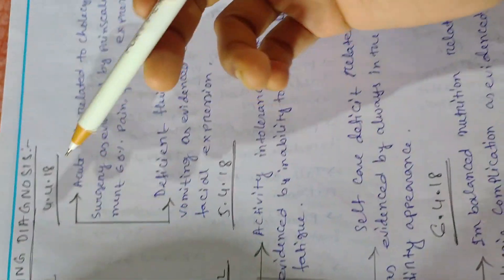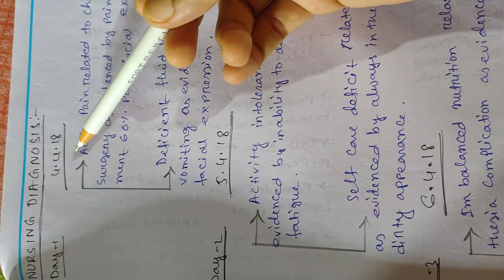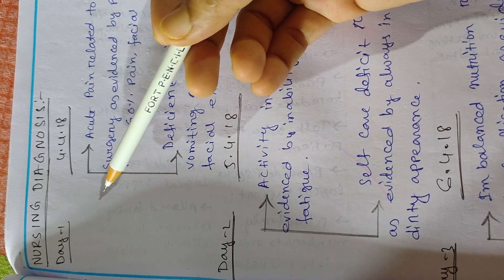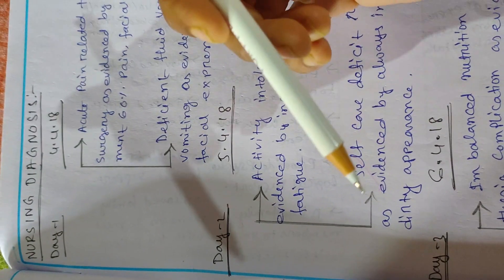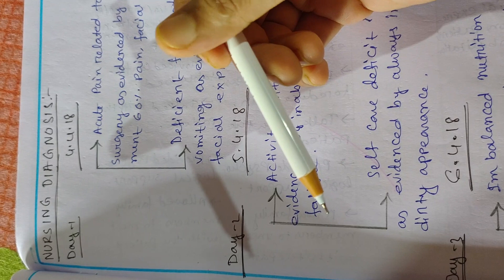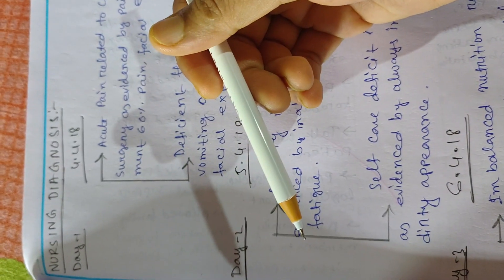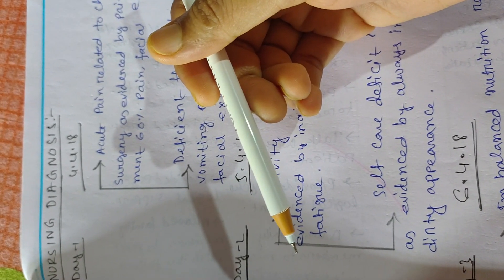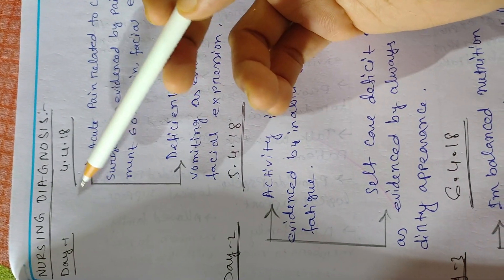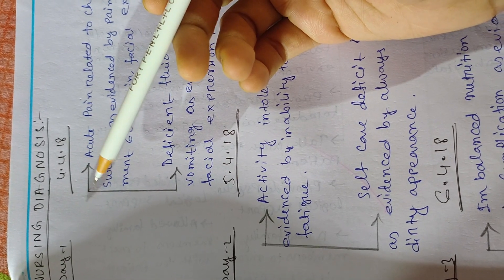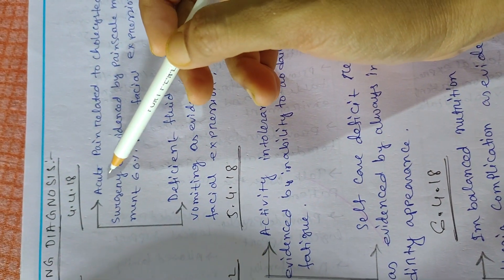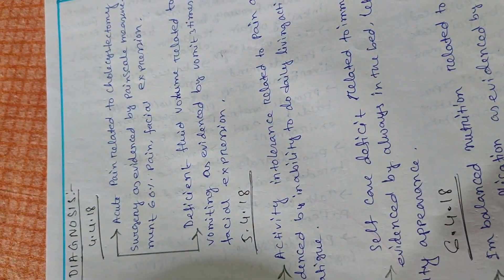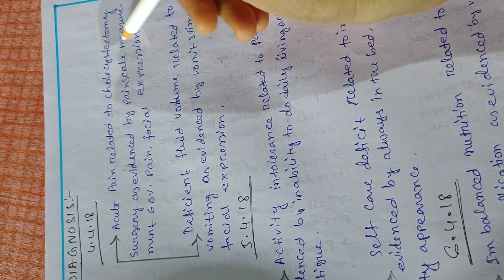The nursing care plan should cover day one, day two, and day three — a minimum of three days of continuous care for the patient. Based on the patient's progress, the nursing care plan is updated accordingly. In case of Cholelithiasis, the first nursing diagnosis can be acute pain related to cholecystectomy surgical procedure.